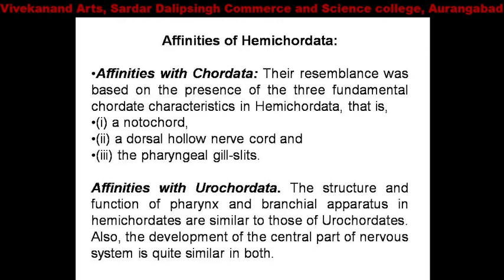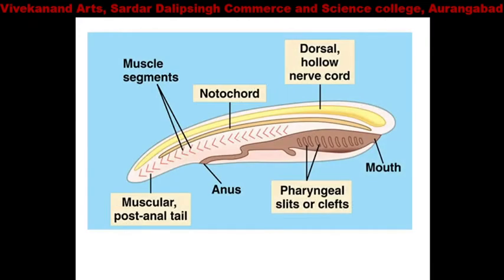Also, the development of the central part of the nervous system — that is, the CNS (brain and spinal cord) — is quite similar in both Hemichordata and Urochordata. This figure shows the presence of notochord below the dorsal hollow nerve cord.